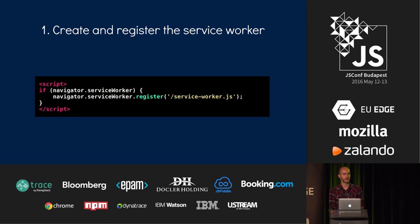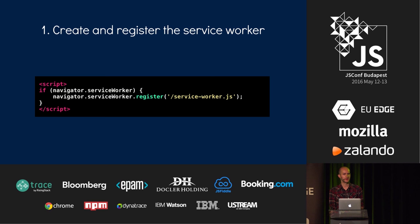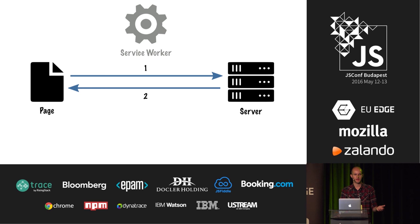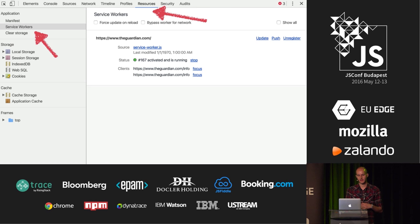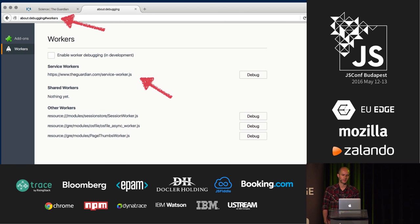Creating and registering a service worker — just imagine we create an empty file called service-worker.js, and on an HTML page, we have a script that tells the browser we want to register it. We have a service worker registered now, but nothing is really happening — the request is just going straight from the page to the server and back. You can see your service worker in the dev tools by going to the resources panel and opening service workers, or in Chrome at about:debugging#workers.